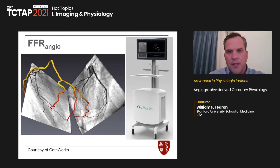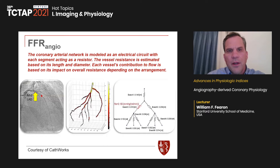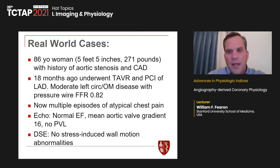FFR-Angio is the one I have the most experience with, so I'll spend a minute talking about how it works. Basically, the coronary arterial network is modeled as an electrical circuit with each segment acting as a resistor. Vessel resistance is estimated based on its length and diameter, and each vessel's contribution to flow is based on its impact on overall resistance. From this, you can estimate the flow in the setting of a stenosis and compare it to the theoretical absence and calculate FFR.